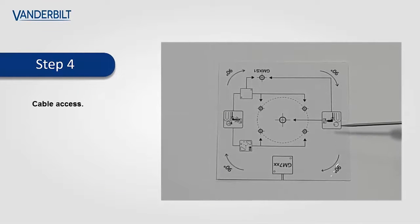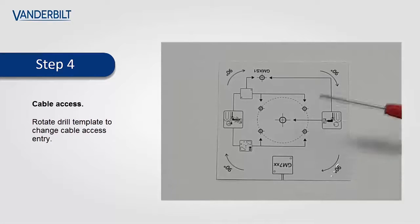The drill template can be rotated through 360 degrees to match up with the cable access entry point for the detector. Here we've turned it through 180 degrees and we now have cable access at the bottom.